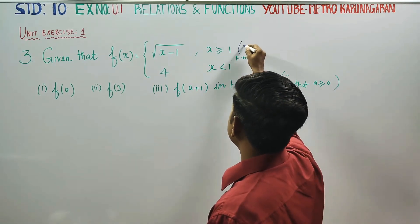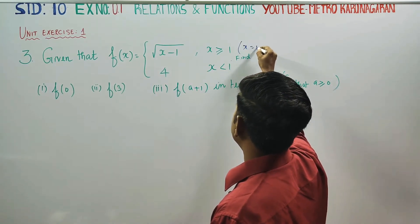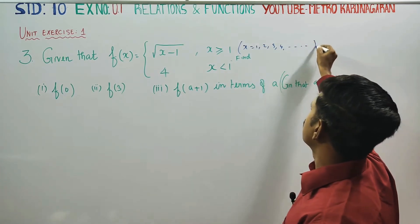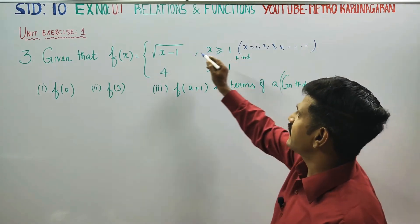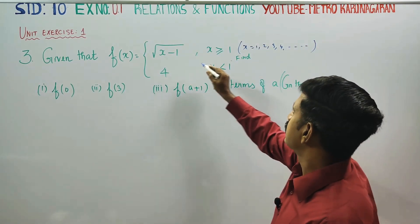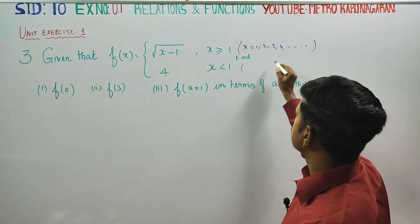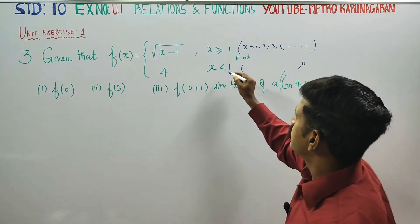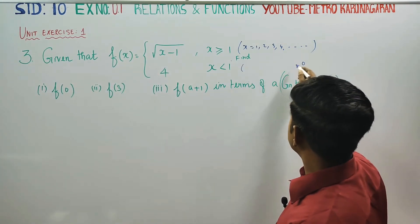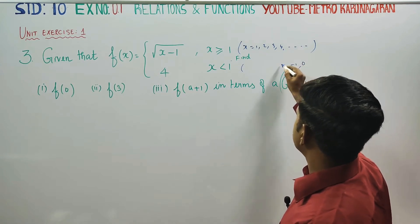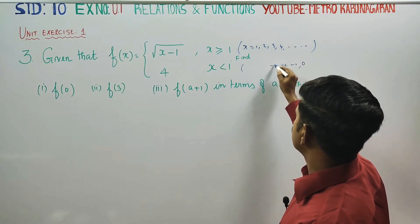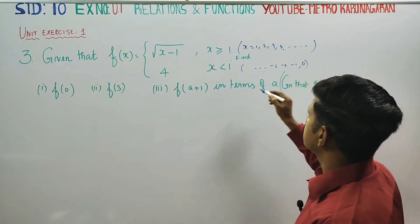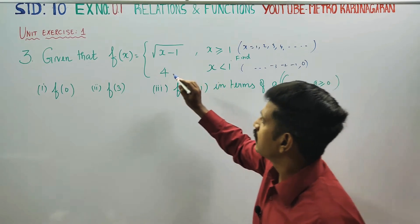It would be meaning in that x equals 1, 2, 3, 4, and so on. That is the function defined as root of x minus 1. Now consider the values 0, minus 1, minus 2, minus 3, where those are less than or equal to 4.